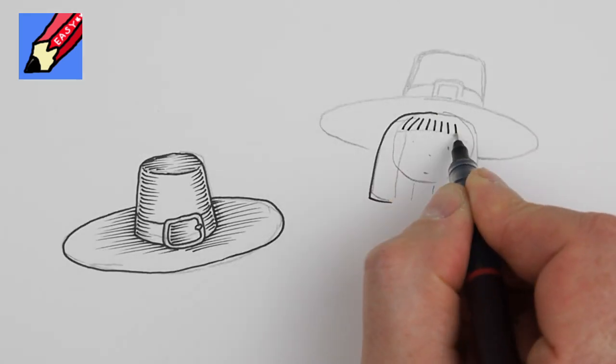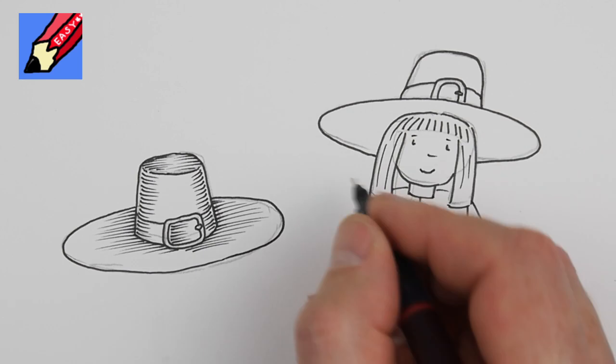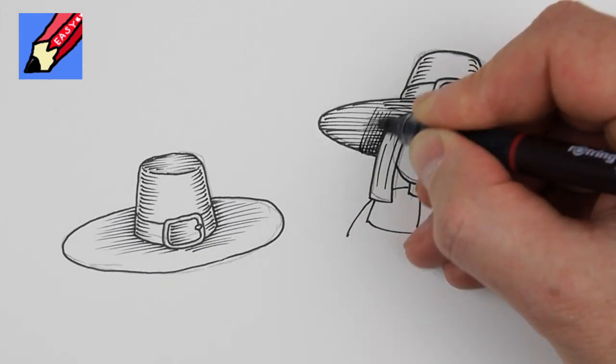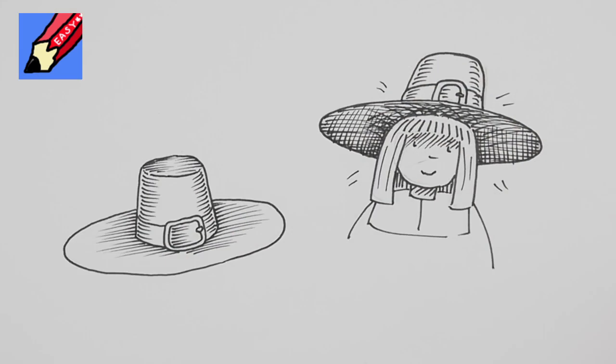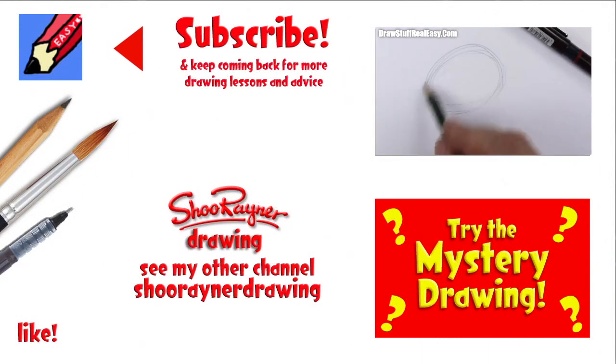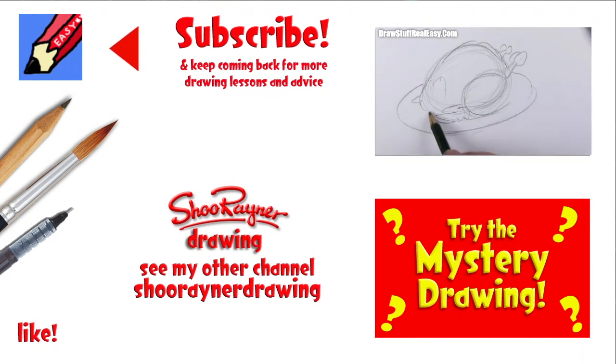Well the next video I'm going to do will be showing you how to draw somebody wearing the hat. So you're getting a view of the hat from underneath. Which is probably how you see it a lot of the time. Well I hope you enjoyed that. And if you did why not go and learn how to draw a roast turkey with all the trimmings around it.